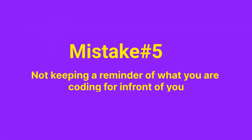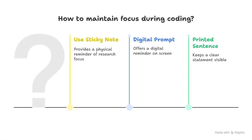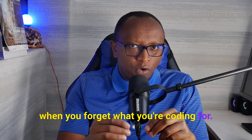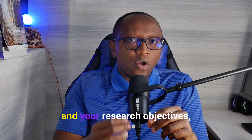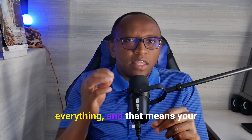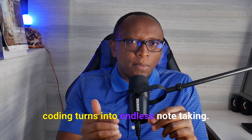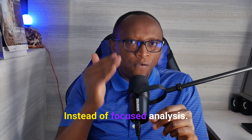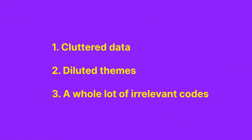Mistake number five: not keeping a reminder of what you are coding for in front of you. Coding without a clear reminder of your research focus — such as your research questions and objectives — means you start tagging anything and everything, and your coding turns into aimless note-taking instead of focused analysis. You end up with cluttered data, diluted themes, and a whole lot of irrelevant codes.